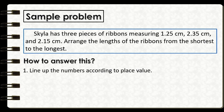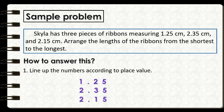First, we are going to line up the numbers according to the place value. So we will write 1 and 25 hundredths, 2 and 35 hundredths, and 2 and 15 hundredths. Make sure to align all the decimal points so that all the digits in their place values are correctly aligned.